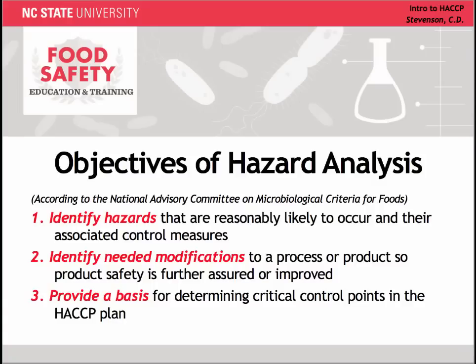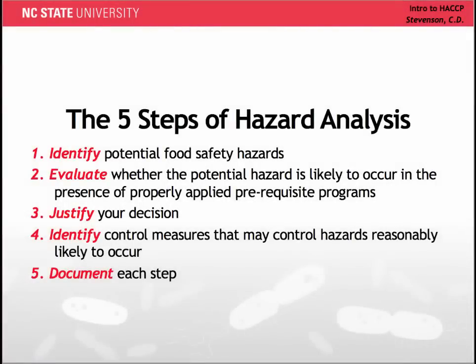By no means was I applying the five steps of hazard analysis. There are five steps in conducting a hazard analysis. What makes HACCP unique is that it adopts a systematic approach towards safety, and these five steps are part of this HACCP system. The steps include: 1. Identify potential food safety hazards that may occur in the system for each step in the process. 2. Evaluate whether the potential hazard is likely to occur in the presence of properly applied prerequisite programs. 3. Justify your decision. 4. Identify control measures that may control hazards that are reasonably likely to occur. 5. Document each step.